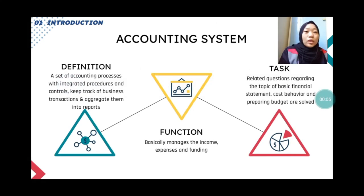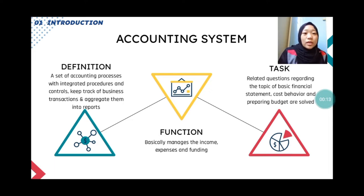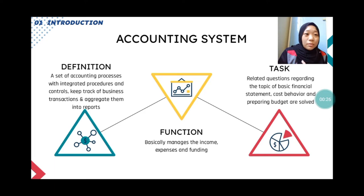First and foremost, an accounting system is a set of accounting processes with integrated procedures and controls, the goal of which is to keep track of business transactions and aggregate them into reports. It basically manages the income, expenses, and funding. In this assignment, the related questions regarding basic financial statements, cost behavior, and preparing a budget are solved.